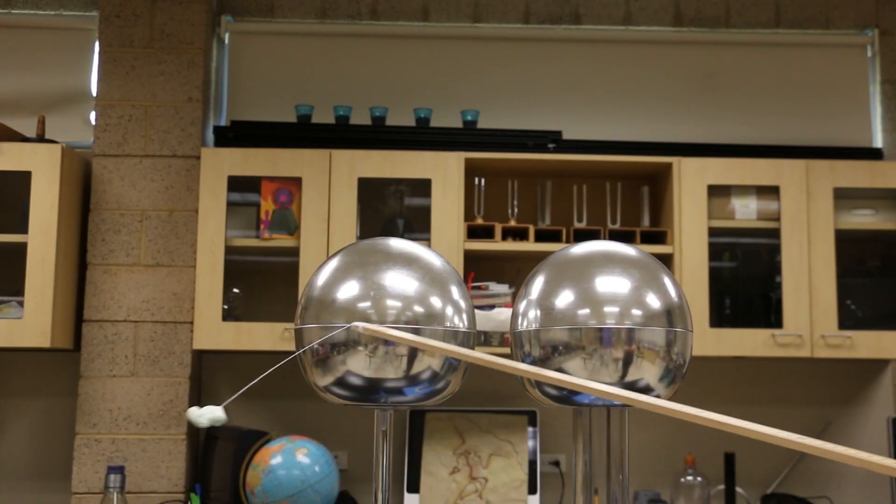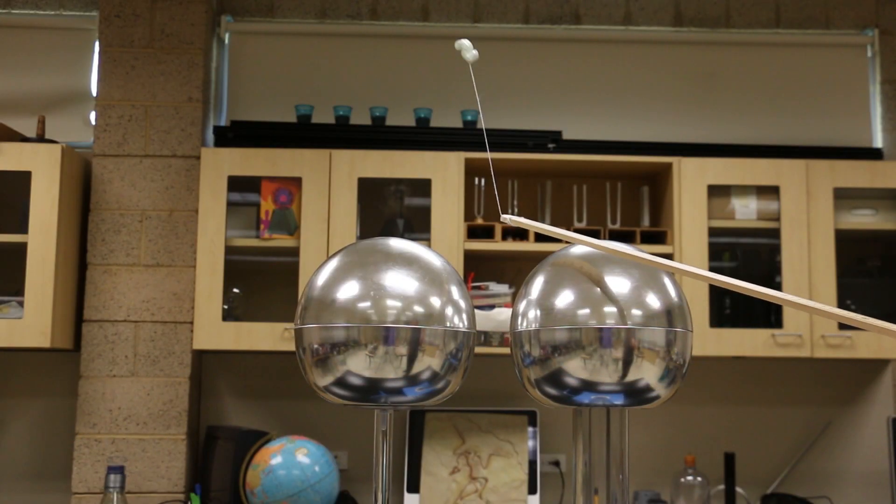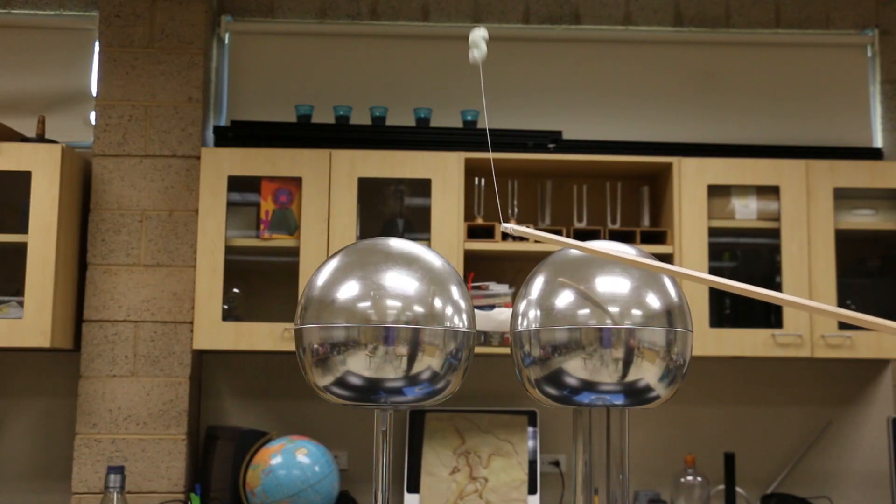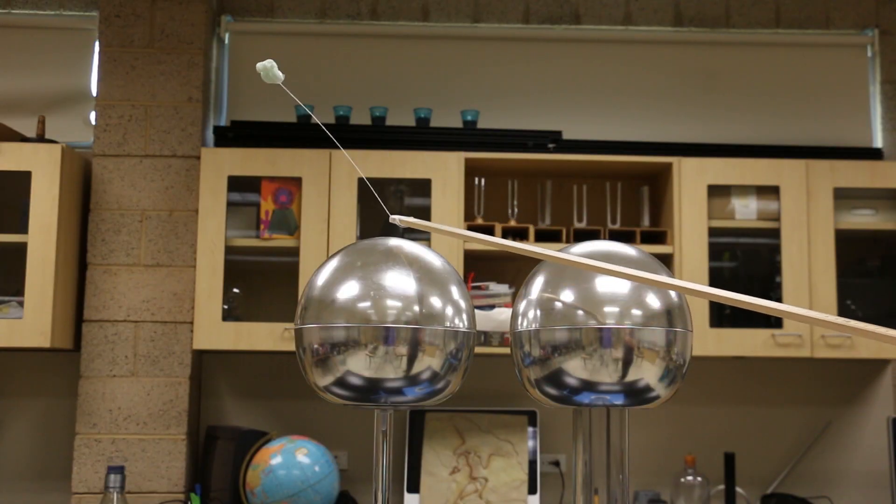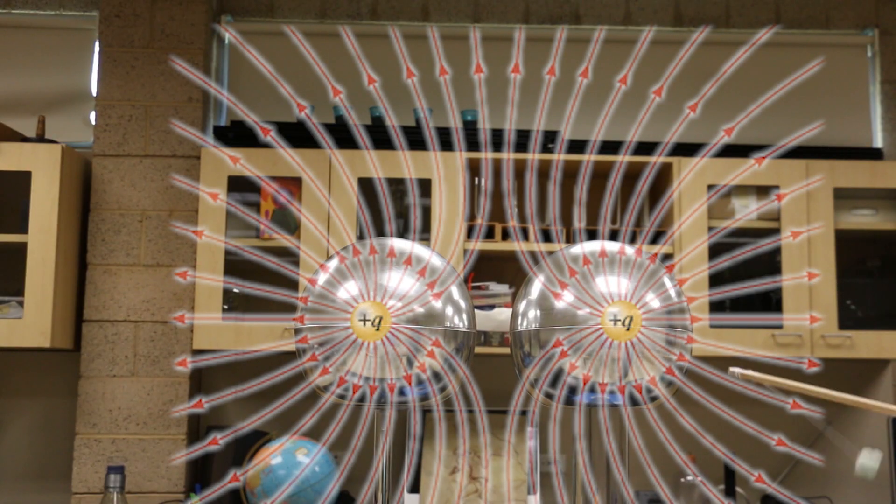If you want to demonstrate the electric field of two like charges, get a second dome but do not connect it to ground. Their electric field lines will point away from each other just like two positively charged electric fields.